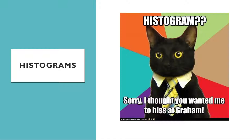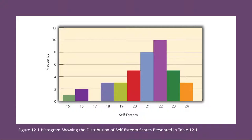Histograms. A histogram is a graphical display of a distribution. It presents the same information as a frequency table, but in a way that's even quicker and easier to grasp. The histogram in figure 12.1 presents the distribution of self-esteem scores in table 12.1. The x-axis of the histogram represents the variable, and the y-axis represents frequency. Above each level of the variable on the x-axis is a vertical bar that represents the number of individuals with that score. When the variable is quantitative, there's usually no gap between the bars. When the variable is categorical, however, there's usually a small gap between them. The gap at 17 in this histogram reflects the fact that there were no scores of 17 in this data set.